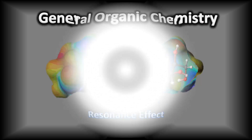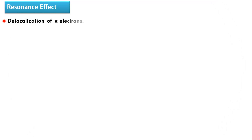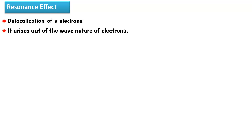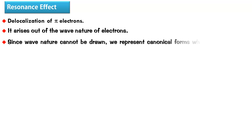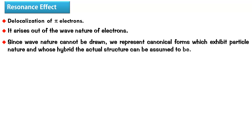Resonance Effect is the delocalization of pi electrons — pi electrons do not stick around one place, they are delocalized. This is because of the wave nature of electrons. Electrons have a dual nature: both particle and wave. The particle nature gives rise to the inductive effect; the wave nature gives rise to the resonance effect. Since we cannot draw the wave nature of an electron, we represent canonical forms which exhibit particle nature, and whose hybrid the actual structure is assumed to be.